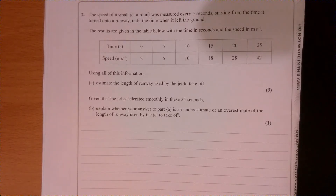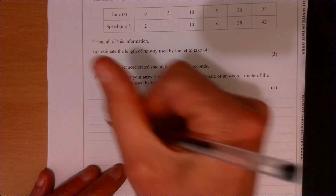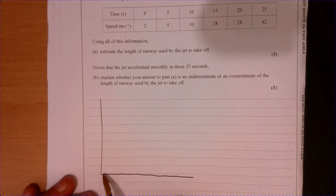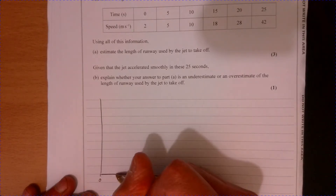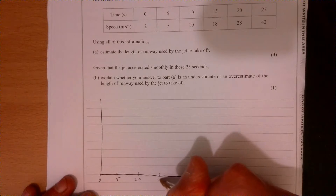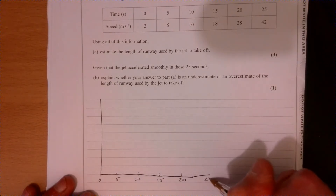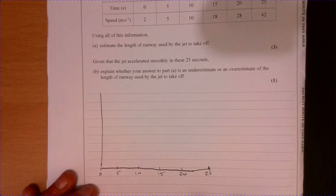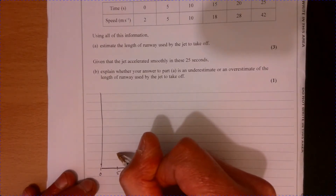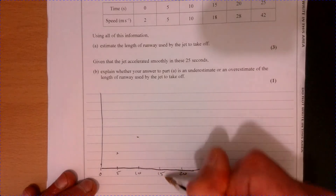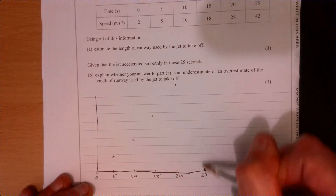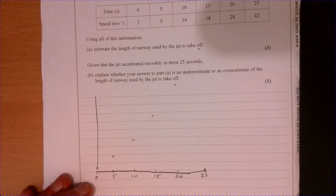Question two — this is just a velocity-time graph. Let's put a little sketch in just to help visualize what's going on. We're told the speed at certain intervals: 0, 5, 10, 15, 20, and 25 — even intervals along here. So it's going to go something like: five's there, ten's about there, fifteen jumps up a little bit, a little bit further — something like that, a nice sort of curve.